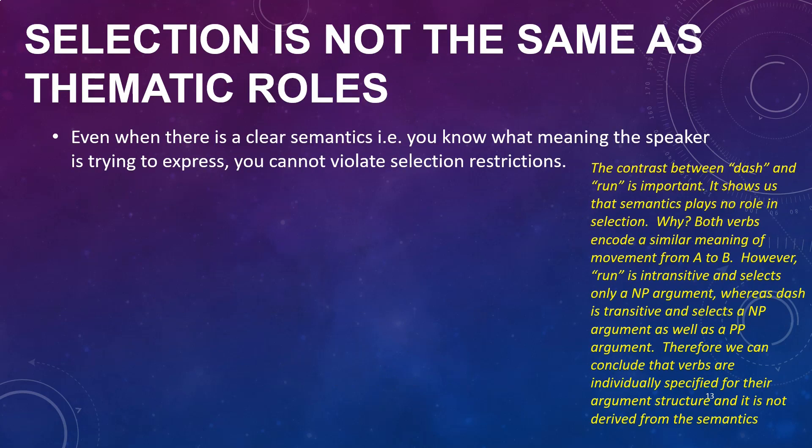We've introduced selection and theta roles. At first glance that seems odd — why would a verb do two separate things? Aren't they just the same thing? Why do we need two separate rules instead of one? This is actually a really important question, because if we're trying to develop a scientific theory of language then we want the simplest possible theory — exactly the kinds of questions scientists would ask. Let's explore this further. Consider 'Jackson slept the cat,' which is clearly ungrammatical.